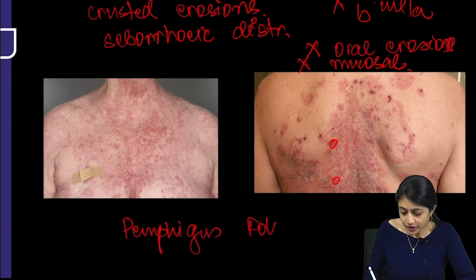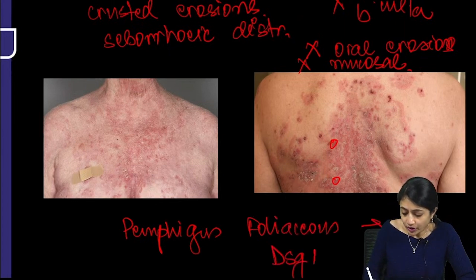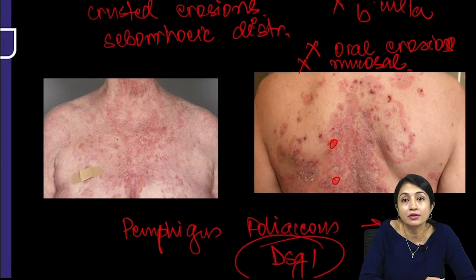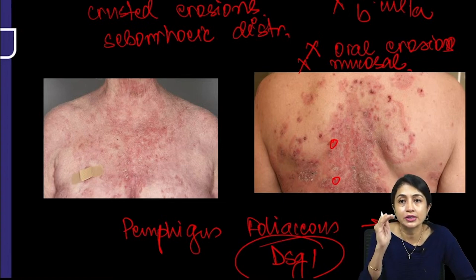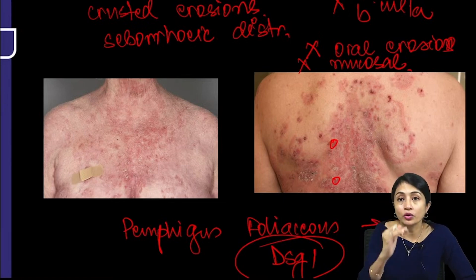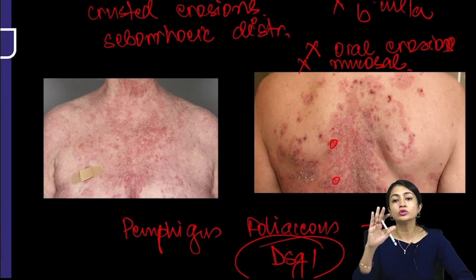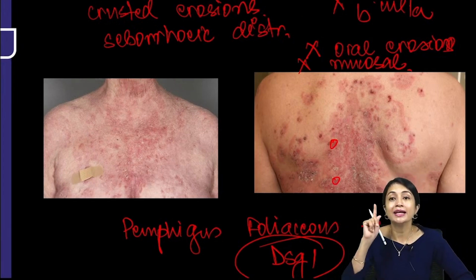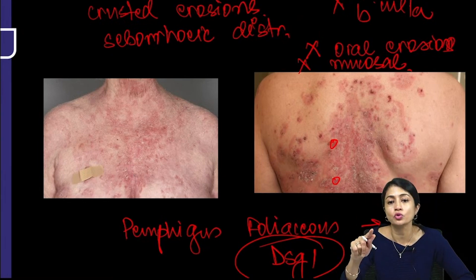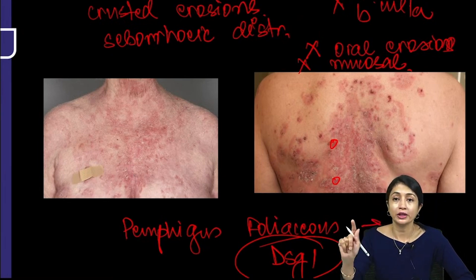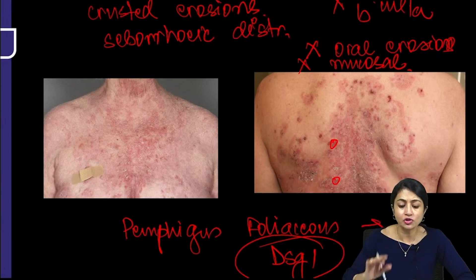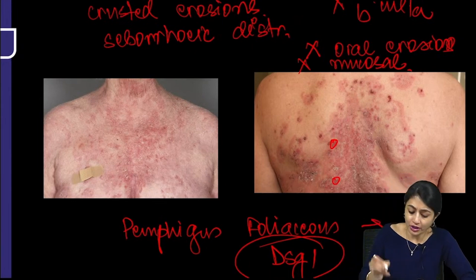Pemphigus foliaceous is a disorder where desmoglein 1 is affected, where the superficial layer of the skin is affected, and the split is sub-corneal. Since the split is so superficial, we do not usually see a bulla — we mostly see crusted erosions. And since desmoglein 1 is not present in mucosal tissue, there is no mucosal involvement. An image like this with this history — think of pemphigus foliaceous.